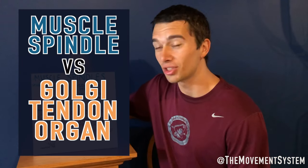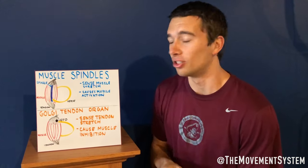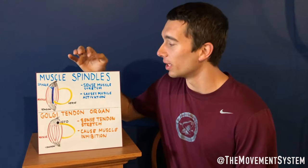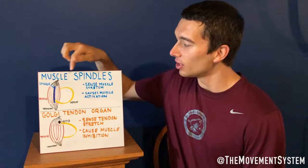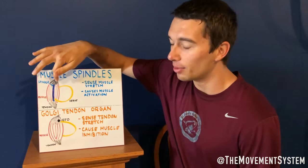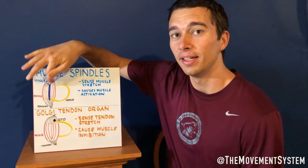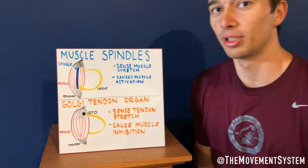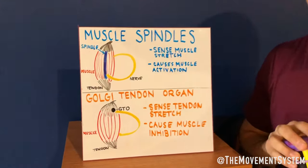We're going to explain the difference between muscle spindles and Golgi tendon organs in five minutes or less. Muscle spindles are really important. These are little muscle fibers within the actual contractile fibers of the muscle.